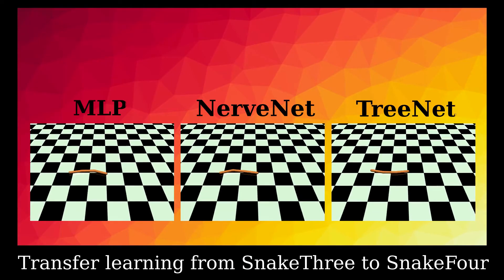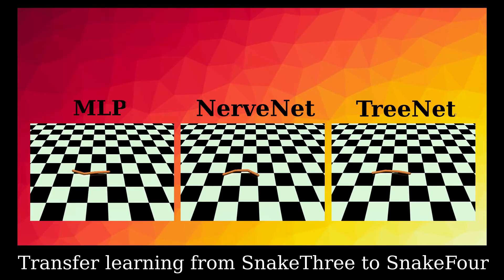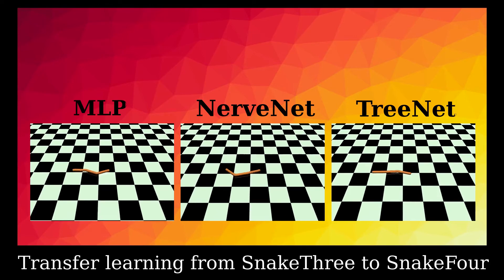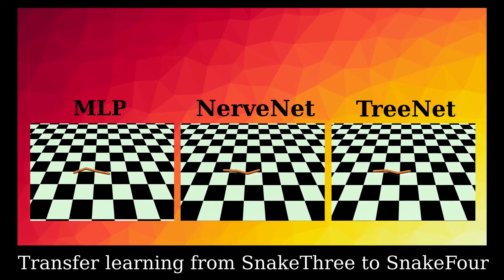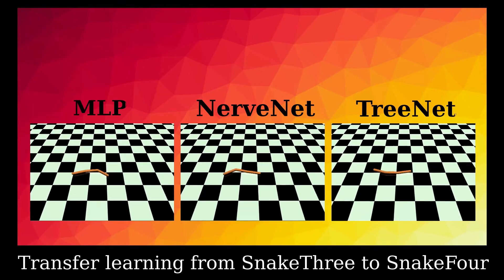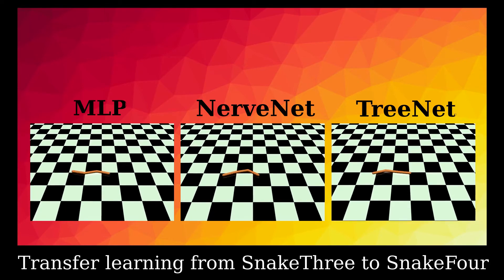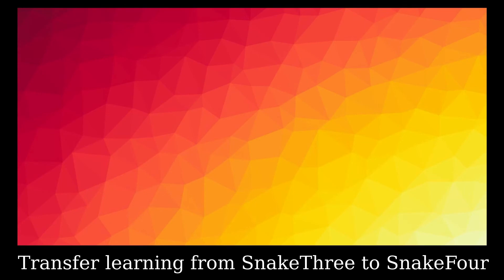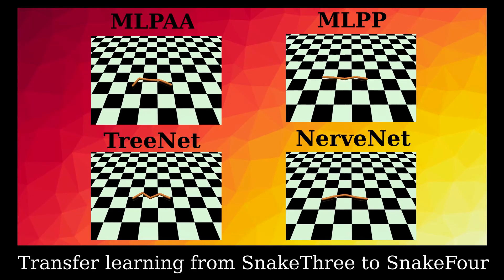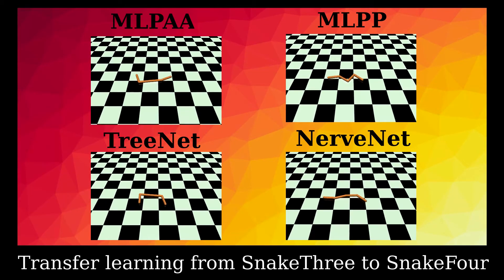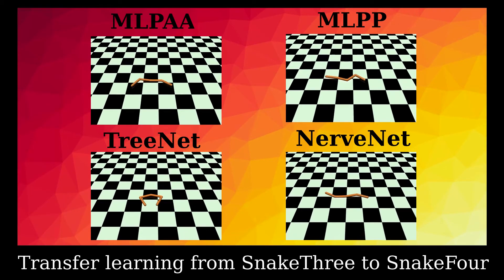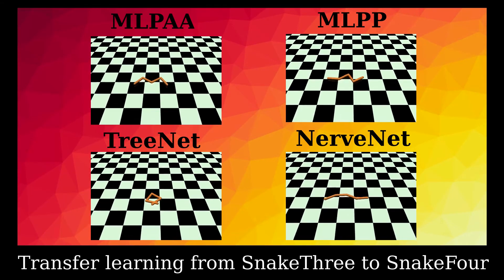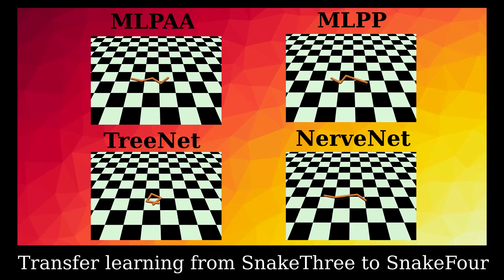We also do experiments on the snakes. Here is the pre-trained model on snakes with three segments. Now we test the performance of snakes with four segments. Again, NerveNet is the only model that could be transferred to new agents.